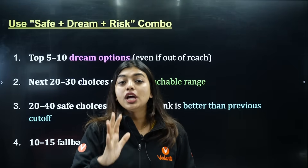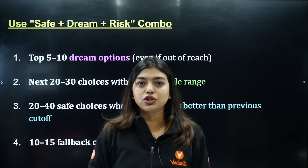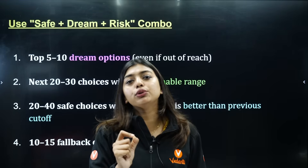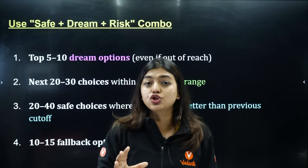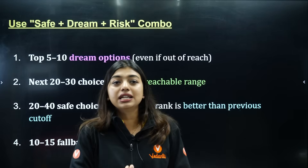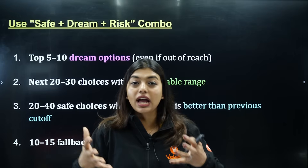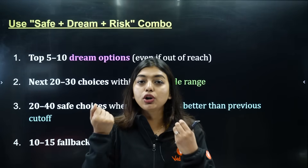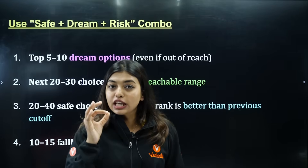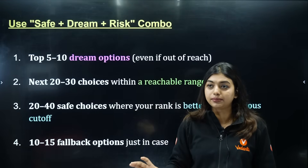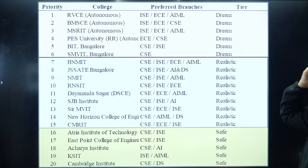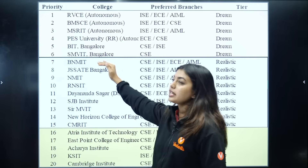So to summarize: 5 to 10 dream choices, then 20 to 30 proper choices according to last year's cutoff, then safe ones where you are 100–200% sure to get in, then 10 fallback options. If you follow this, I can assure no student will end up in a wrong or average college with a mediocre branch. Please share this video with all your friends — I want every student doing choice filling to see this.